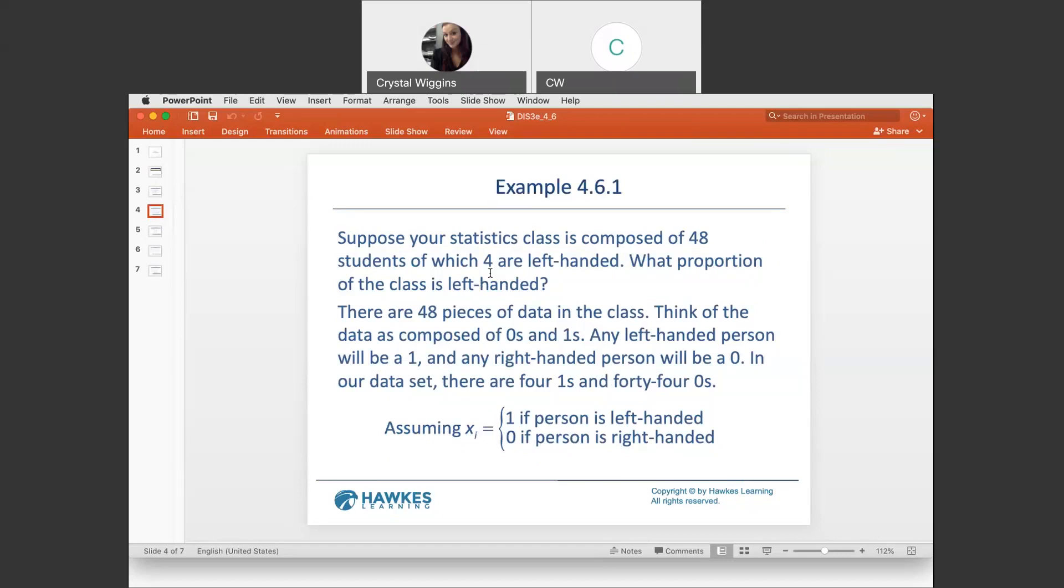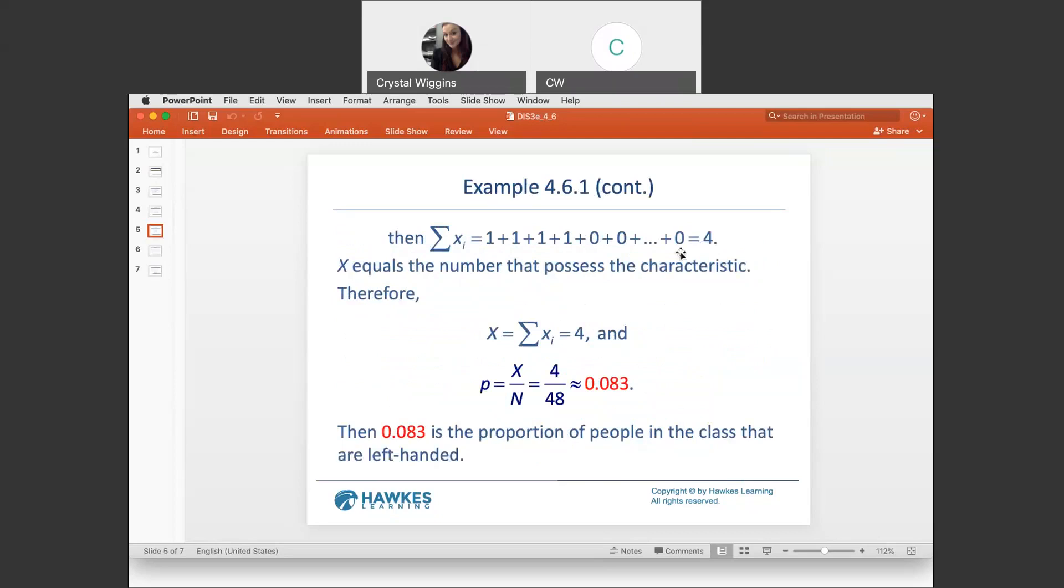Our proportion will be calculated by taking the part, 4, and dividing it by the whole, 48, which gives us approximately 0.083 for the proportion. And if we were to multiply by 100, we'd get 8.3% of the class is left-handed.